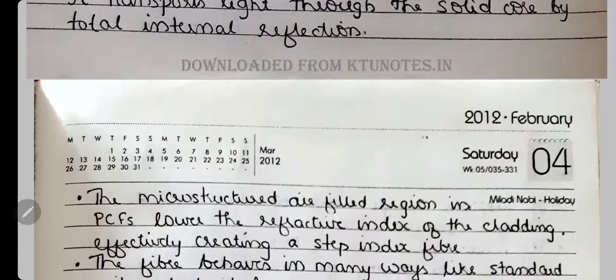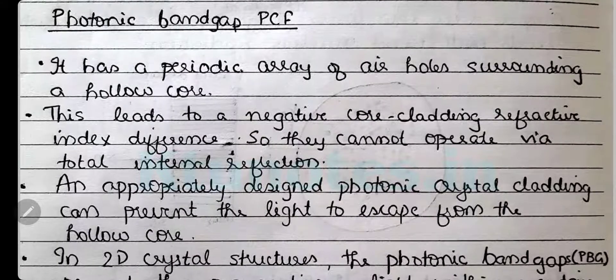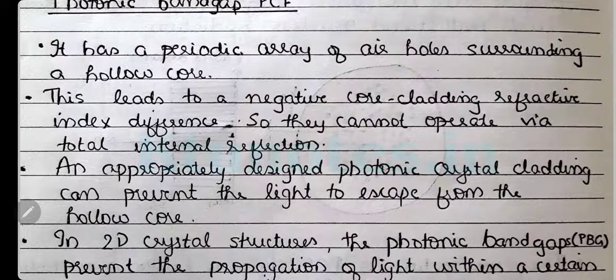The next type of PCF is photonic bandgap, or air guiding PCF. Photonic bandgap PCF has a periodic array of air holes surrounding a hollow core. Because of the hollow core, it cannot operate via total internal reflection.